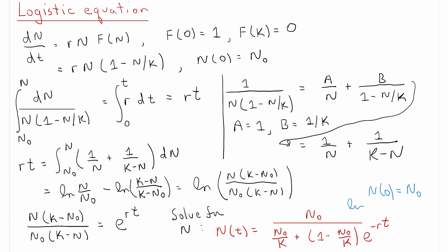So the limit as t goes to infinity of n of t equals the carrying capacity K. K then is setting an upper bound to the size of the population.